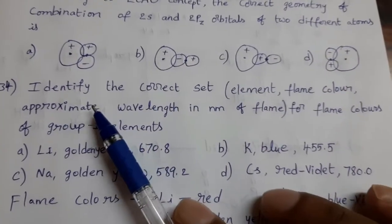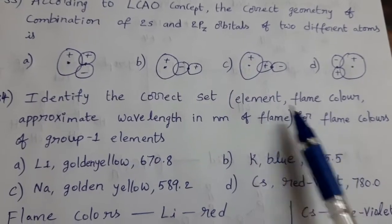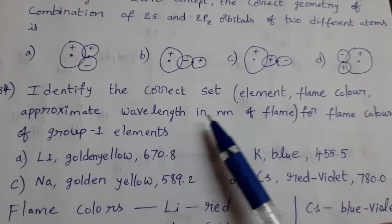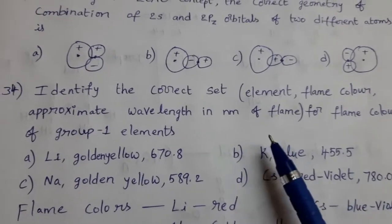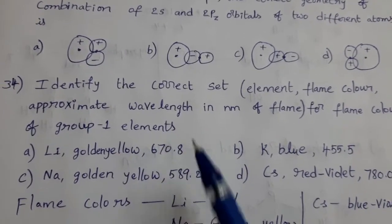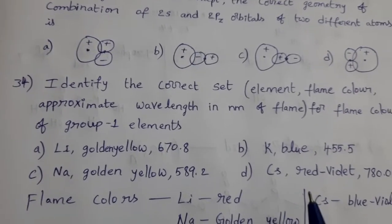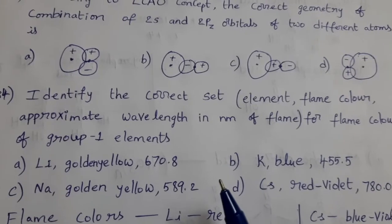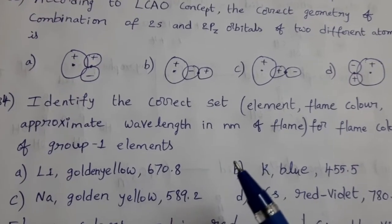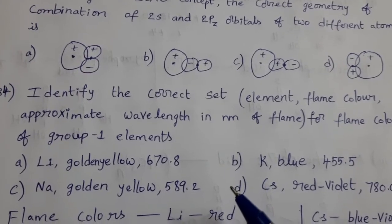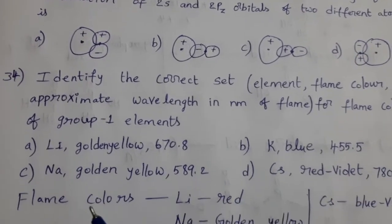Next, identify the correct set: element, flame color, and approximate wavelength in nanometer of flame for the flame colors of group 1 elements. Group 1 means lithium, sodium, potassium, rubidium, cesium, francium. For these group 1 elements, what is the color in flame test? At what wavelength we can observe those colors?